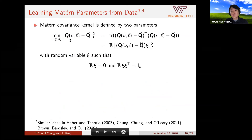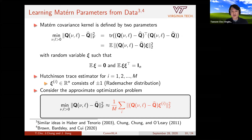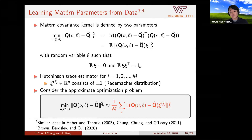By defining only two parameters we can define Q, so we rewrite the optimization problem to find Q with only two parameters. Since the Frobenius norm is not easy to solve directly, we use the trace of the matrix, which equals the expectation over random variables with zero mean and identity covariance. We choose the Hutchinson trace estimator by using the Rademacher distribution. This allows us to approximate the optimization problem. There are also recent papers by Brown, Saibaba, and Iqbal using stochastic PDE problems to define Q, which are also good references.